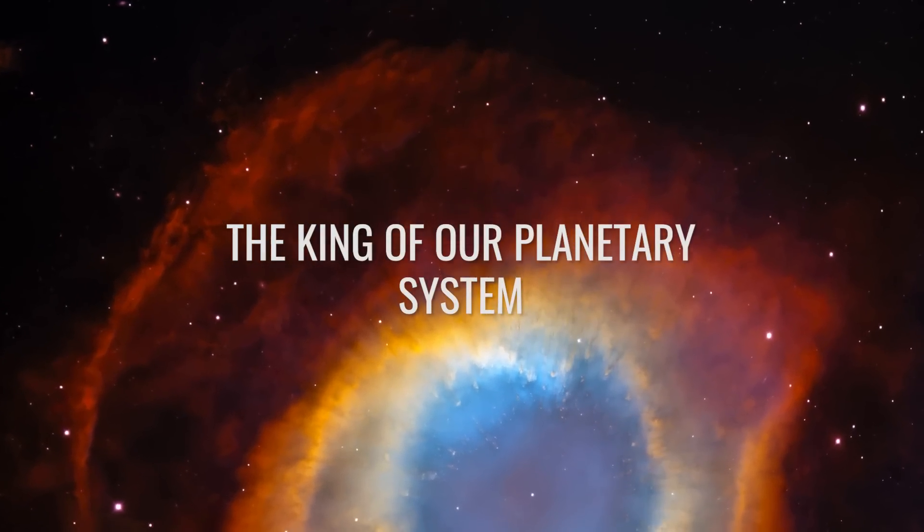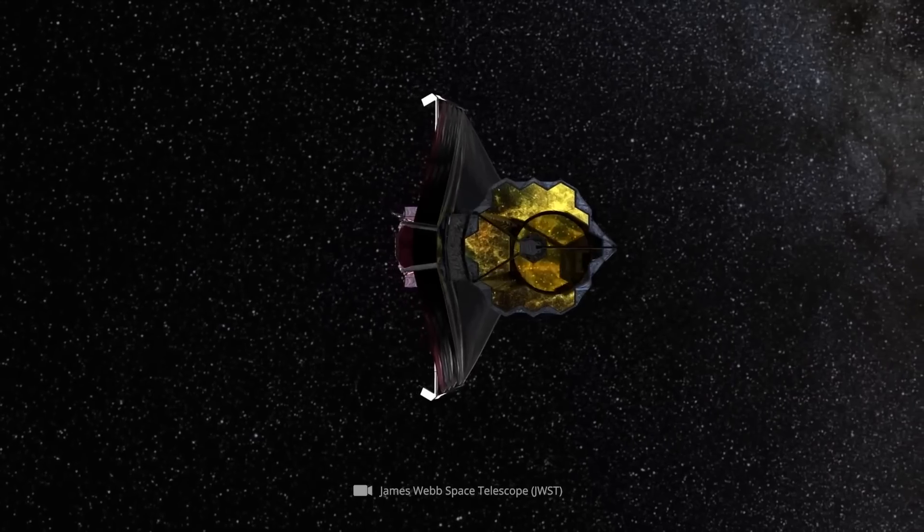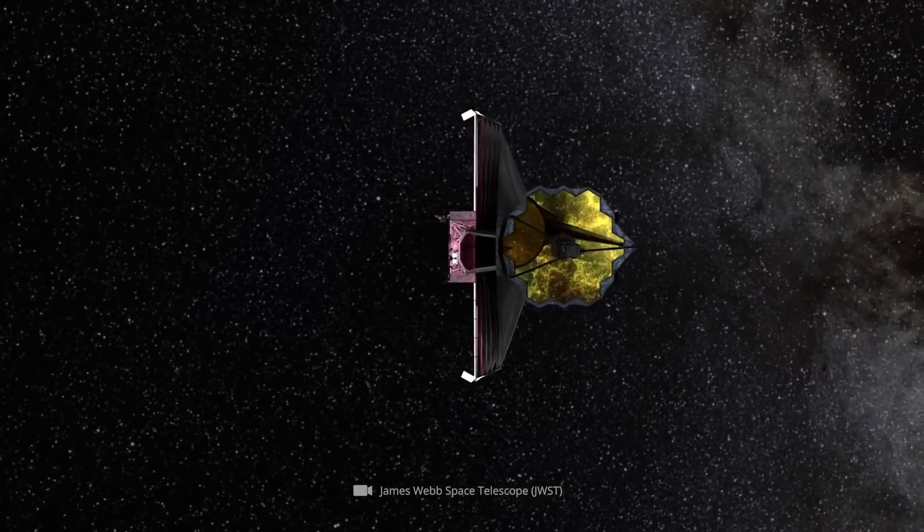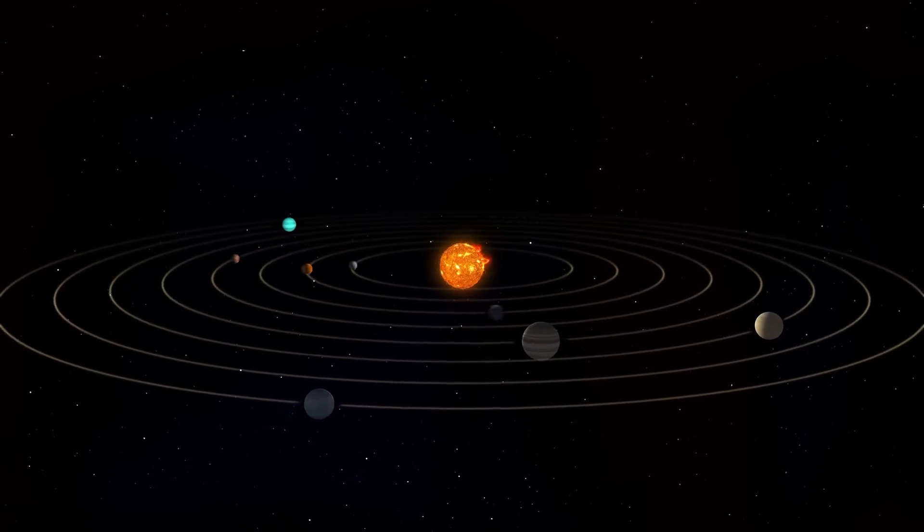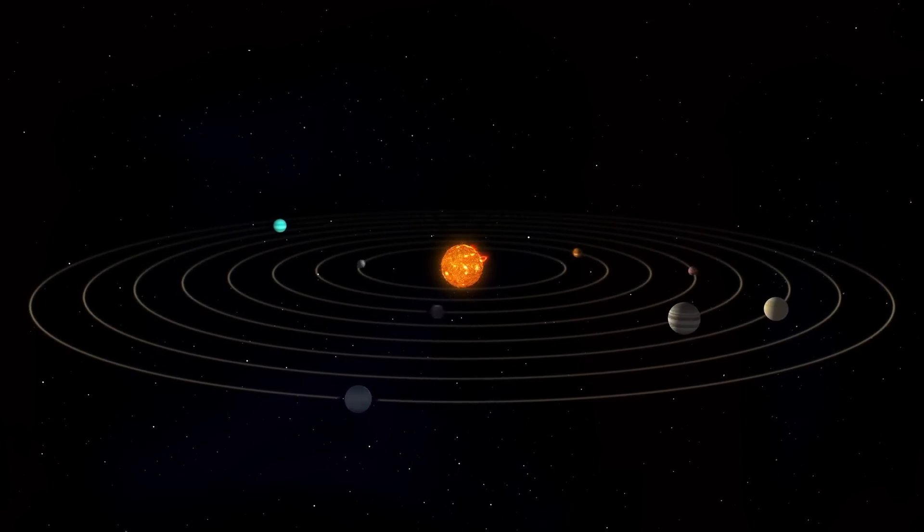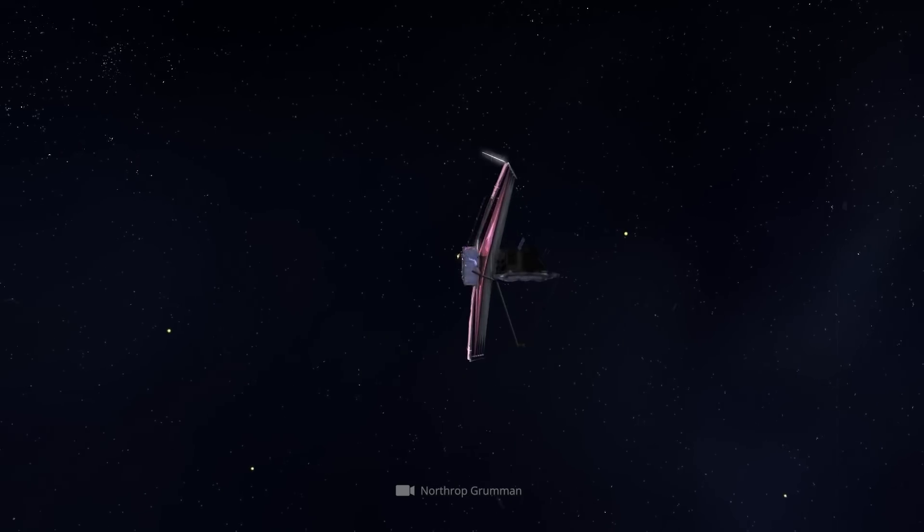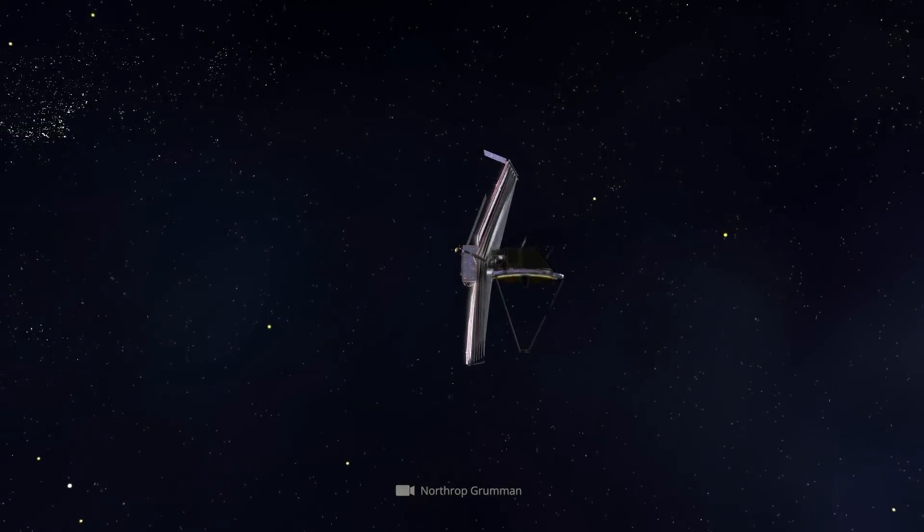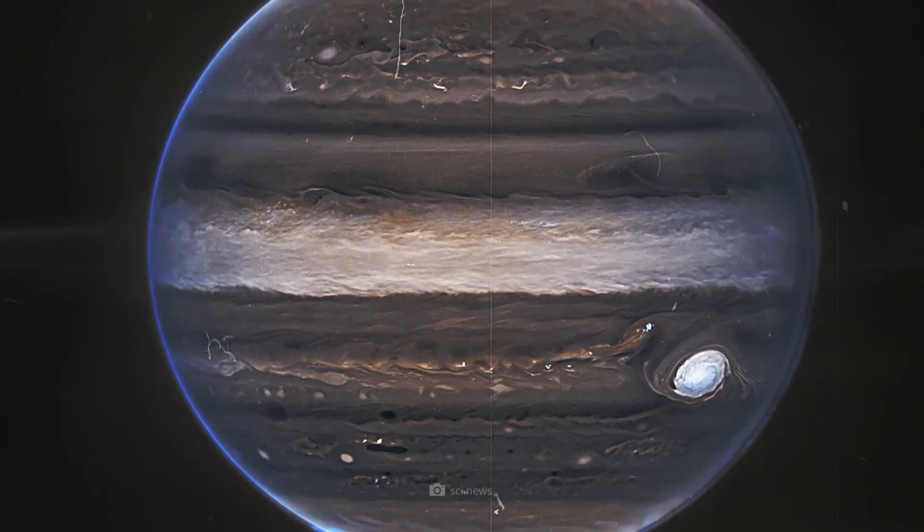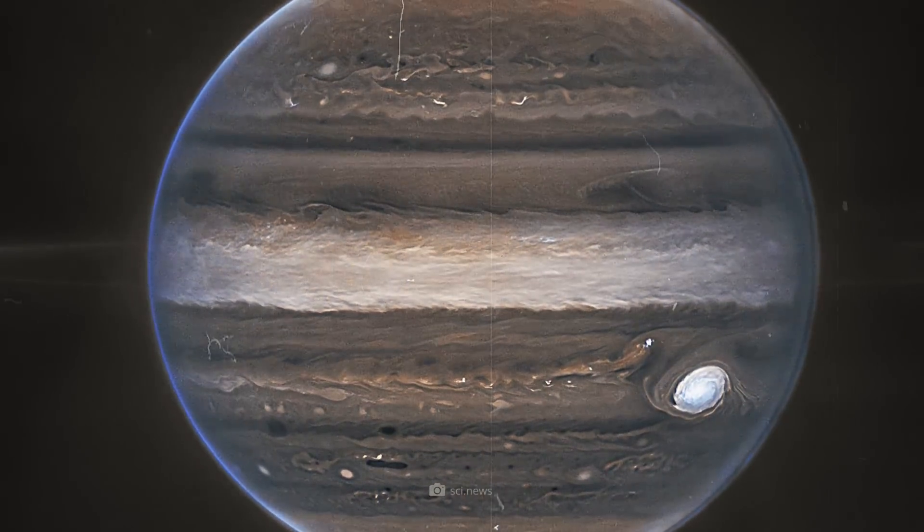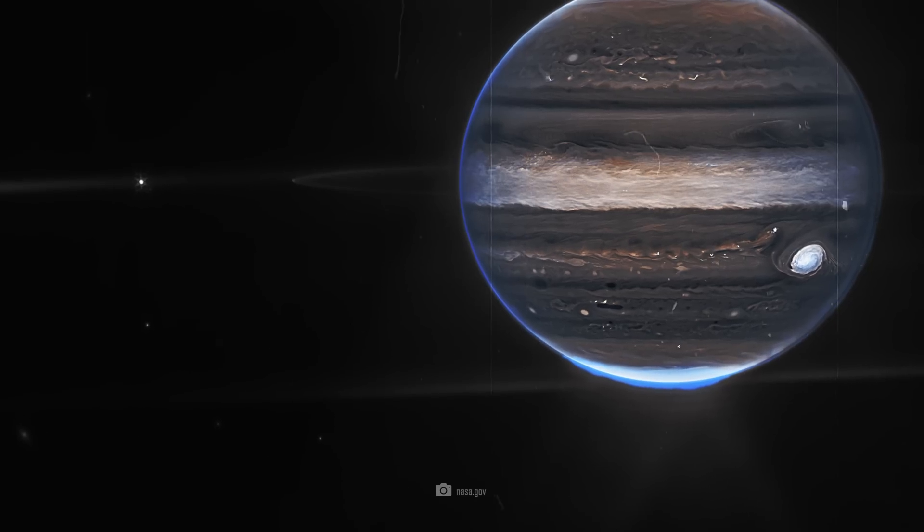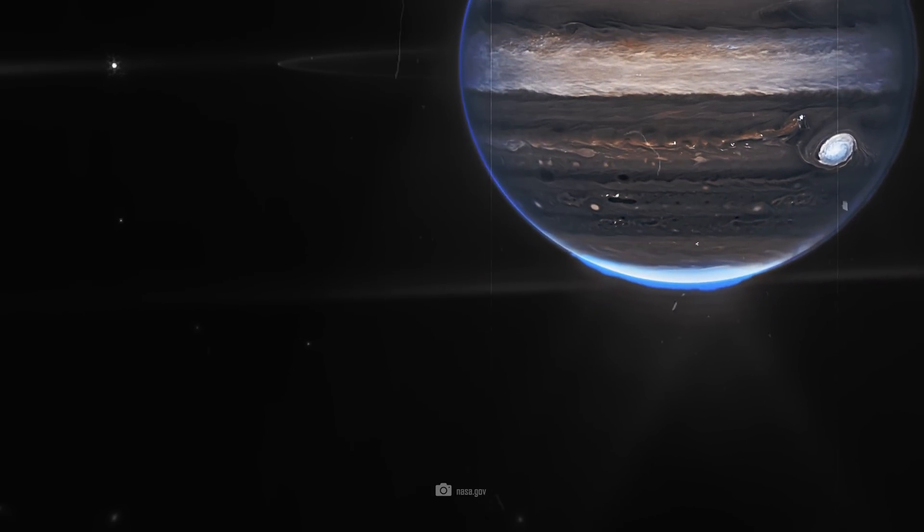The king of our planetary system. While Webb is best known for tracking down the most remote and thus oldest structures in the observable universe, we should not forget that from time to time it also takes a look at our immediate planetary neighborhoods. Just how novel the view of the familiar can be is shown by the fascinating images of Jupiter, which show the king of our planetary system in a light never seen before. And that is meant quite literally. The human eye would not be able to perceive the details made visible by Webb.